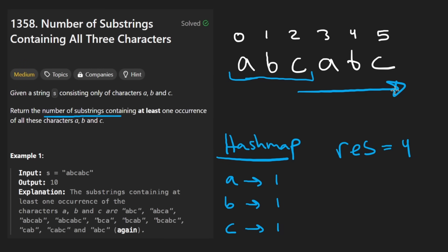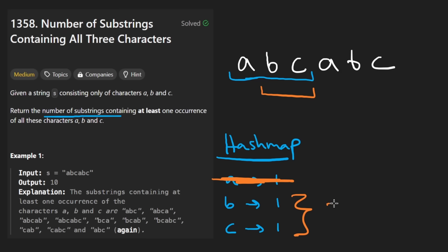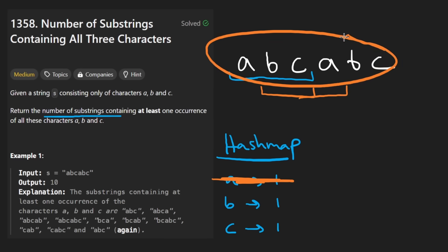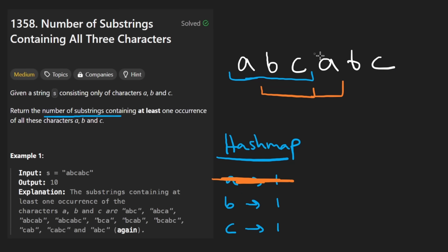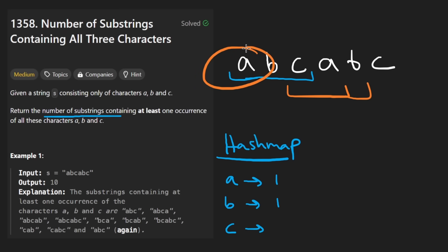Now, how do we figure out how many substrings start from the next character? We just shrink the window until it's no longer valid — shift the left pointer by one, which removes the A, and then the hash map length is only two, so we no longer have all three characters. We can continue to expand from the right. Each time we find a valid window, we take that same distance calculation and add it to the result.